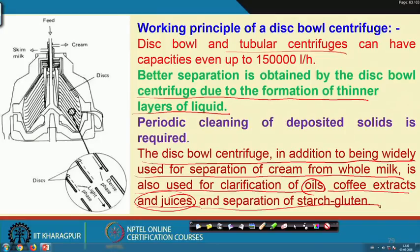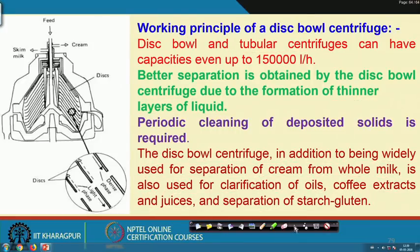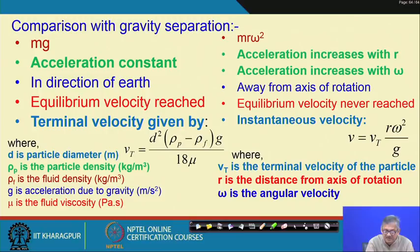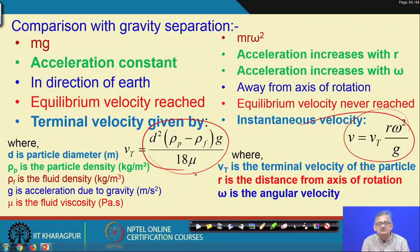Recalling that fat globules try to agglomerate and then get separated — both by gravity separation and centrifugal separation. Let us frame one numerical problem utilizing the information given, to find out the velocities for both cases.